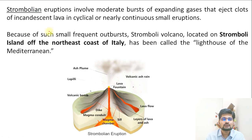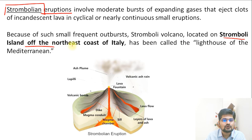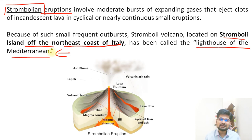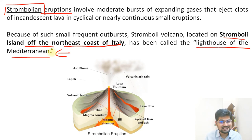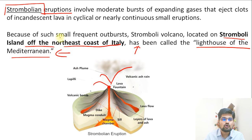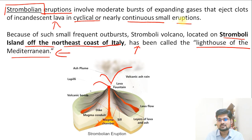The third type is Strombolian eruption, named after Stromboli Island off the northeast coast of Italy, also known as the 'lighthouse of the Mediterranean.' The Stromboli volcano continuously keeps burning, giving light like a lighthouse. The eruption is not extremely large but is continuous and cyclical in nature.